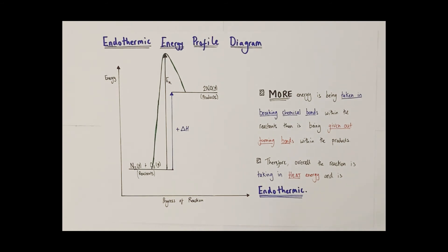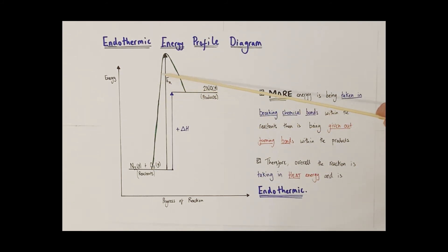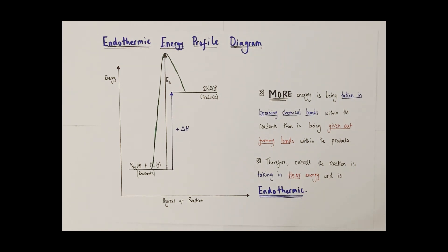Can we explain this diagram in terms of BENDOMEX? We can, because this time much more energy is being taken in breaking bonds within the reactants than is being given out making bonds within the products. Therefore overall, more energy is being taken in in the form of heat than is being given out, so this overall process will be endothermic. I hope this video helps you understand the two terms and also the key aspects of drawing energy profile diagrams correctly.